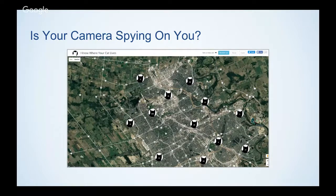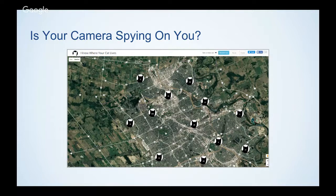One site I share with students about personal devices leaking information is called 'I Know Where Your Cat Lives.' When you click on it, it shows a picture of a cat — but researchers took 10 million pictures of cats from social media worldwide and used the GPS data embedded in photos by cell phones to plot them all. Inadvertently, people are sharing pictures of what's in their homes or where they tend to congregate. When I show this in class it usually derails things for about 10 minutes as everyone searches their neighborhoods.